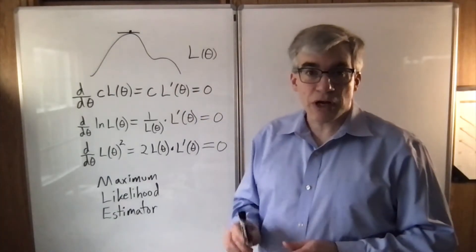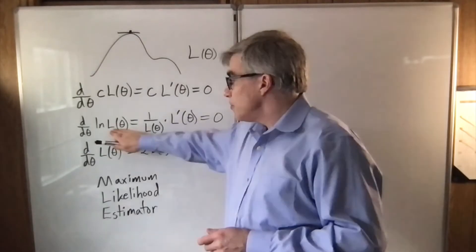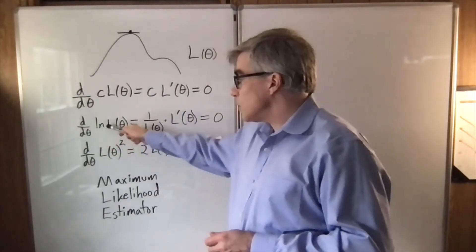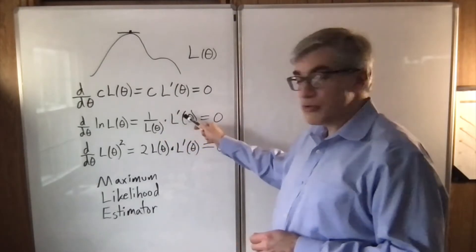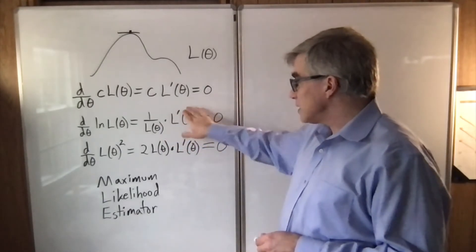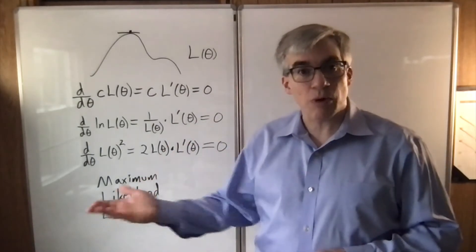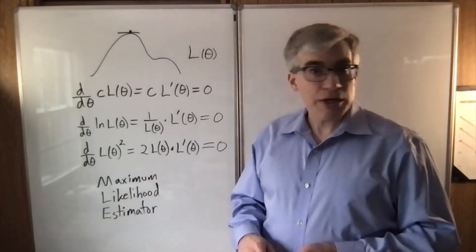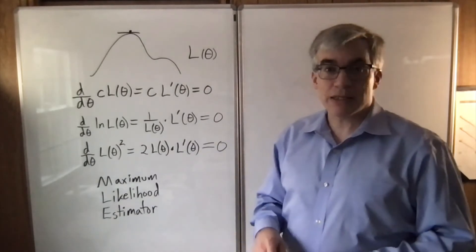Another trick that is very common is to use the log likelihood. Because if you do the derivative of the log of a function, you get one over the function times the derivative of the function. And sure enough, that's going to equal zero exactly when L' equals zero, which is what we were after. We don't actually care about the function, we just care about the location of its maximum.